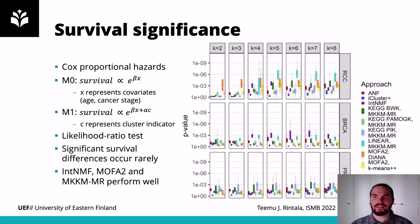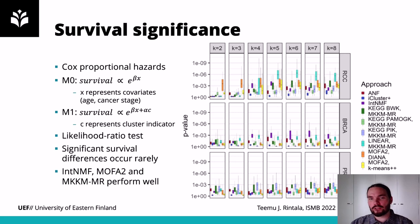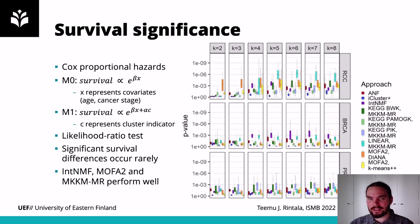As for survival results, these are p-values based on a likelihood ratio test between a baseline model that includes just the covariates — age and cancer stage — and an augmented model which also includes a cluster indicator variable. Based on these results we can see that many clustering algorithms struggle to yield significant clusters from the viewpoint of survival, but methods like integrativeNMF, MOFA+, and kernel k-means seem to perform well for at least some number of clusters.